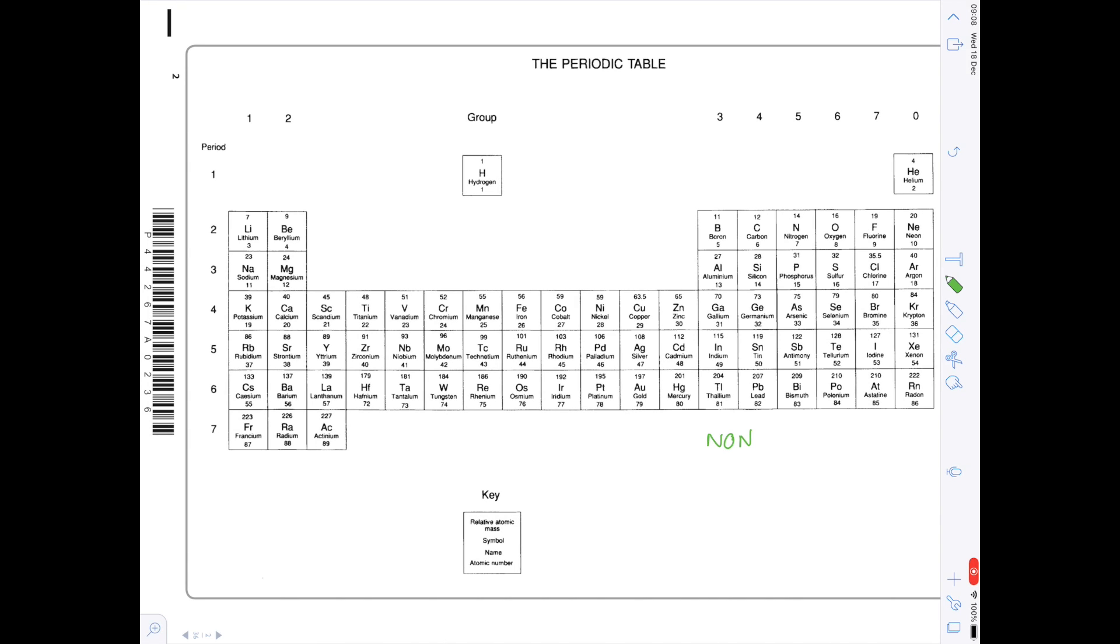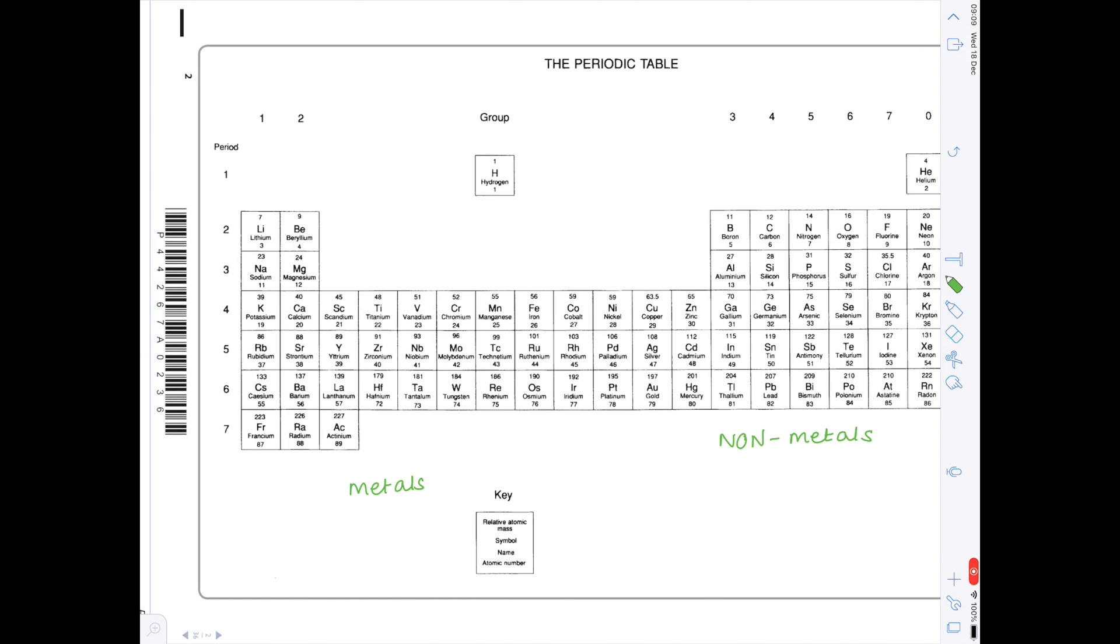Remember that the right hand side is the non-metals, the left hand side is the metals and therefore what comes with that is specific properties. Remember that metals are good conductors of heat and electricity and that's due to their free electrons.